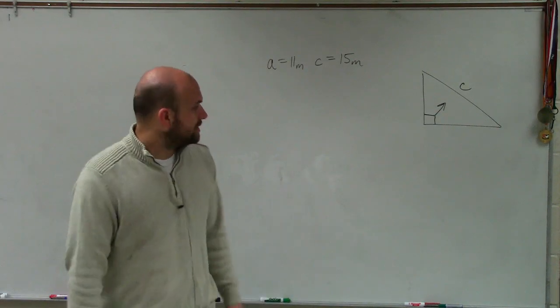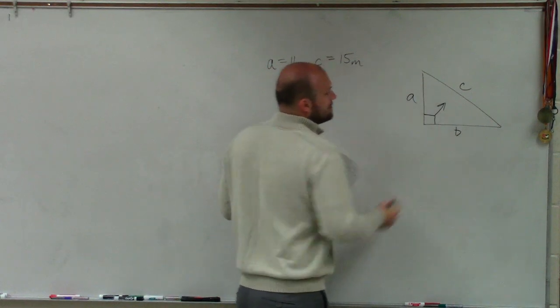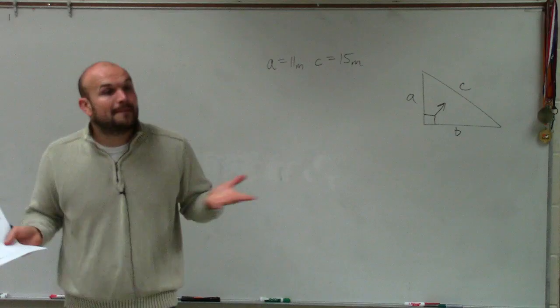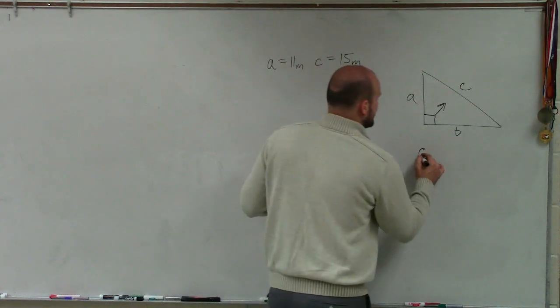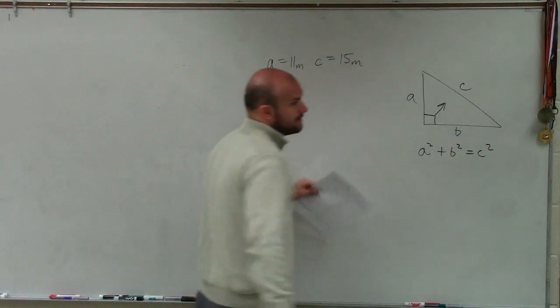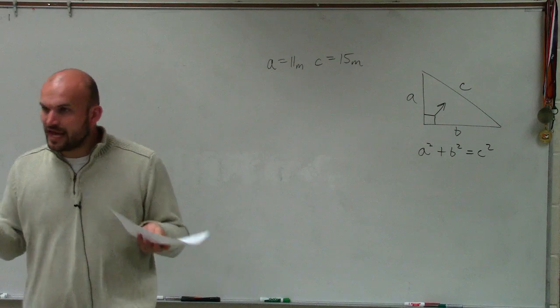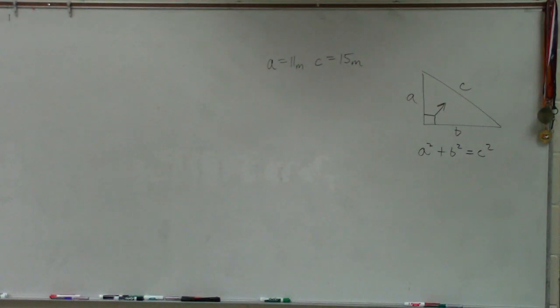So we're going to call this C, and then we're going to call the two legs A and B, where the two legs are going to make up our 90 degree angle. And if you remember, what we learned at the beginning of the year is A squared plus B squared equals C squared. Where the two legs squared added up together equals our hypotenuse squared.